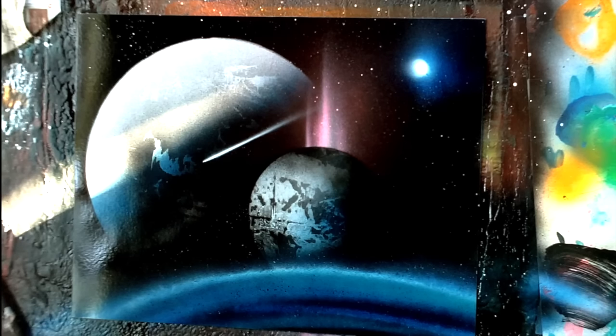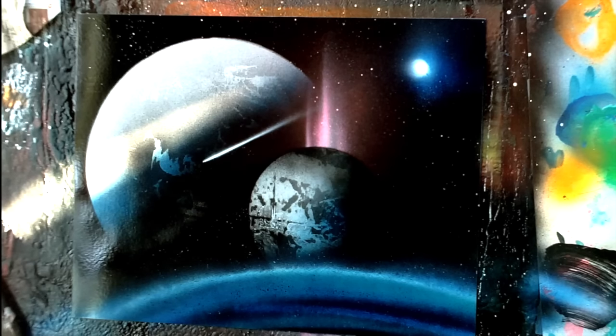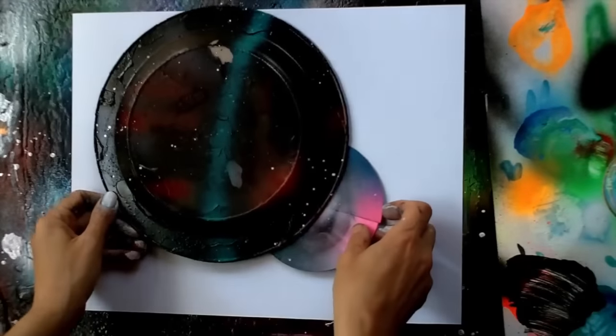All right, welcome. In this video I'm going to show you real quick how to do a whole bunch of really cool effects. Check it out - we've got one planet in front of another, we've got a comet, we've got the light shooting out from the top of the planet, and we've got the atmosphere underneath those planets.